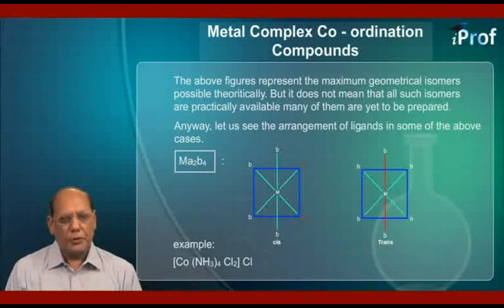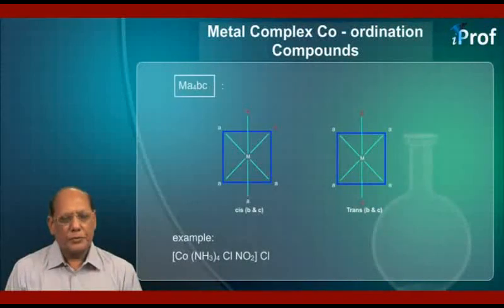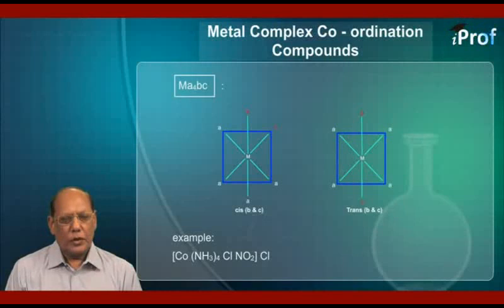An example representing these two forms is [Co(NH3)4Cl2]Cl. Next is MA4BC. An example of such a complex is [Co(NH3)4(Cl)(NO2)]Cl, where outside the coordination sphere there is one chloride ion. This too will have, as shown here, cis and trans — two geometrical isomers.